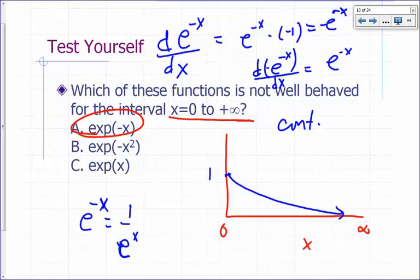And if you square it, the plot pretty much looks like this, it's just very similar, and it's still going to have an area under the curve, that's finite. So this is well-behaved, and you should be able to show the same thing for e to the negative x squared. But what about this one, e to the x?